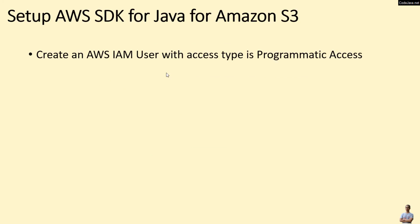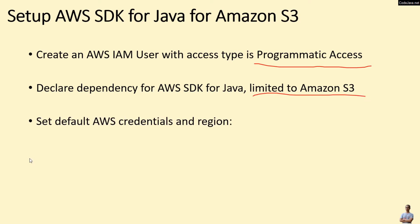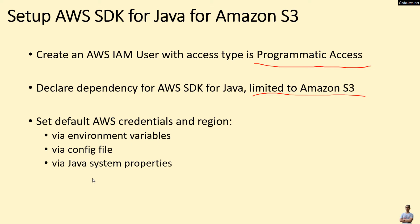Basically, here are the steps to set up AWS SDK for Java for Amazon S3. First, we need to create an AWS IAM user with access type as programmatic access. Then declare a dependency for AWS SDK for Java limited to Amazon S3. Then set the default AWS credentials and region via environment variables, config file, or Java system properties. In this video, I will show you how to configure AWS credentials via environment variables.